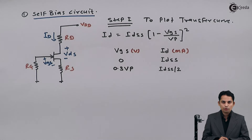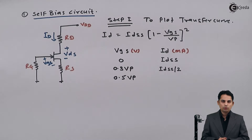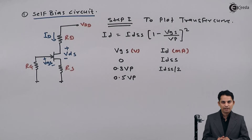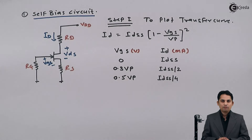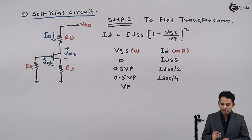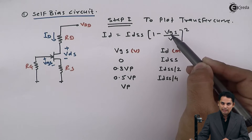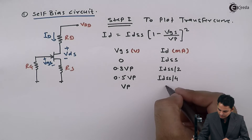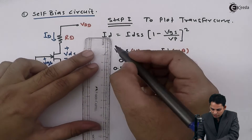For the next value, we take Vgs equal to 0.5 Vp. Substituting this gives Id equal to Idss divided by 4. For the last point, we substitute Vgs equal to Vp. Then Vp divided by Vp becomes 1, and 1 minus 1 is 0. Anything multiplied by 0 is 0, so Id equals 0. These are the different values obtained for Vgs and Id.